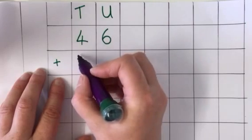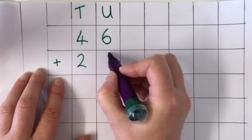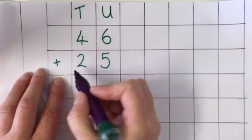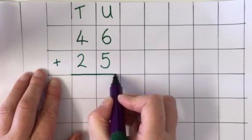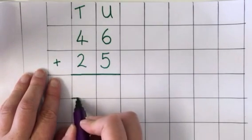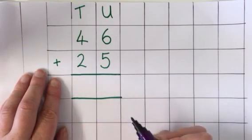I need to add 25 to this 46, so I correctly position 25. Put a space for my answer. This time I'm going to draw a line underneath as well. You'll see why in a moment.